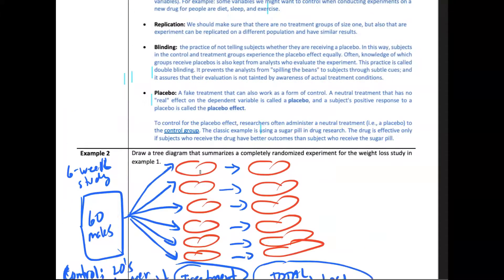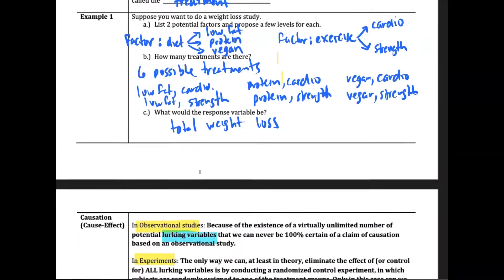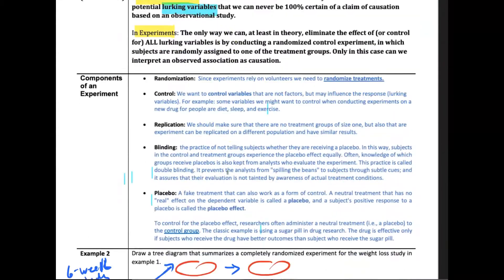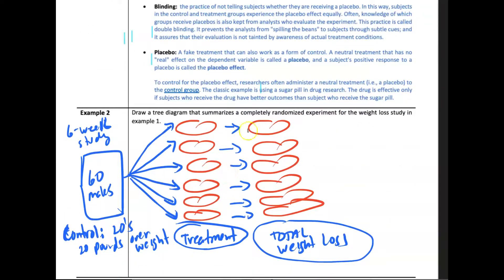We give them a treatment—one of these treatments, one of these diets and exercises. They would be treated, and then after six weeks we look at the response variable, the total weight loss. We've controlled for things and can see which one actually produces the best weight loss.